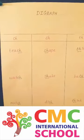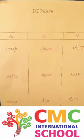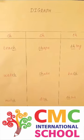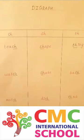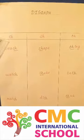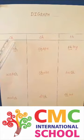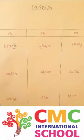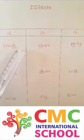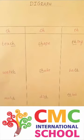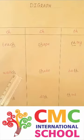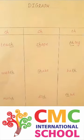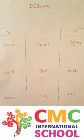A digraph is a group of two successive letters that represent a single sound. Letters C and H make the sound CH. For example: teach, watch, match.